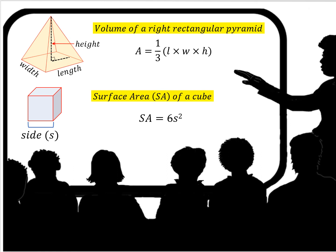Now let's look at the surface area of a cube. Surface area is represented as SA. The surface area of a cube is 6 times the side squared. That makes sense because there are 6 sides to a cube — one on top, one on bottom, and then four around the sides.